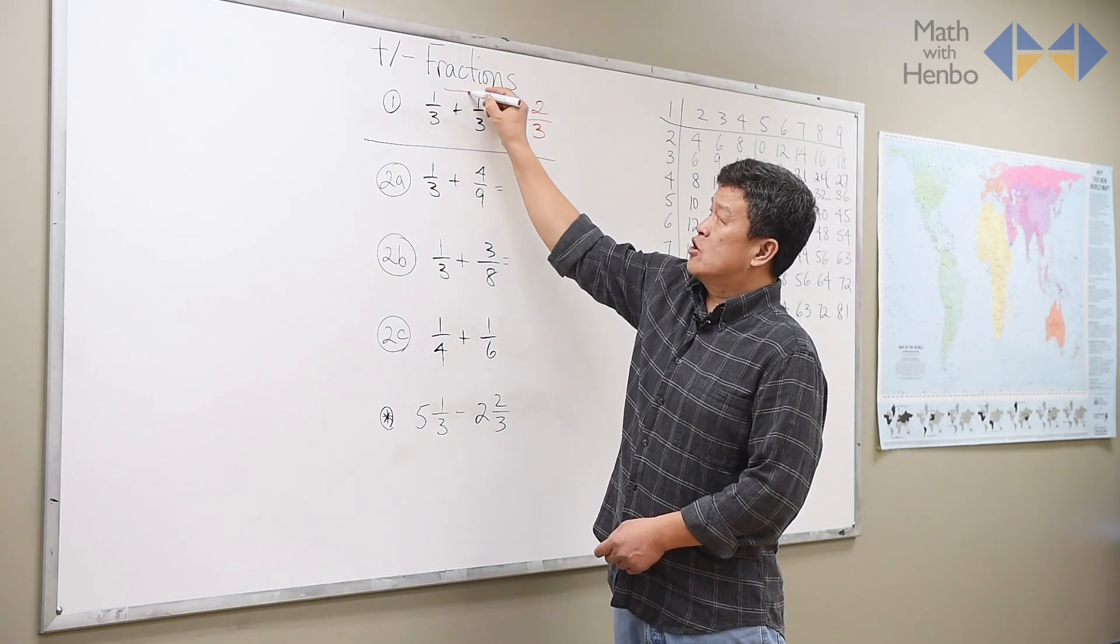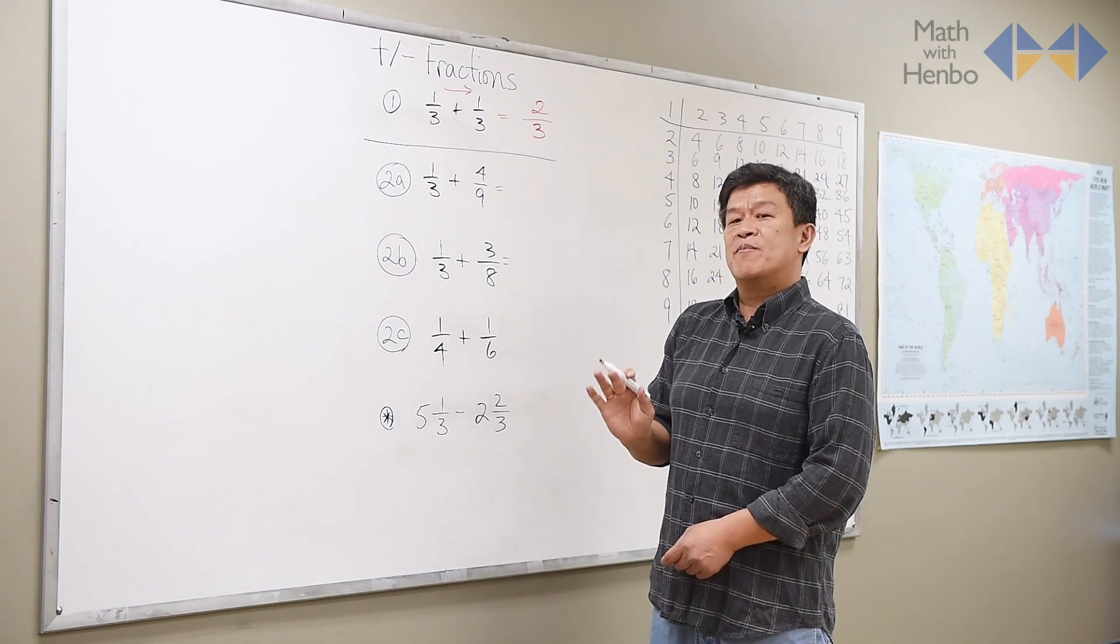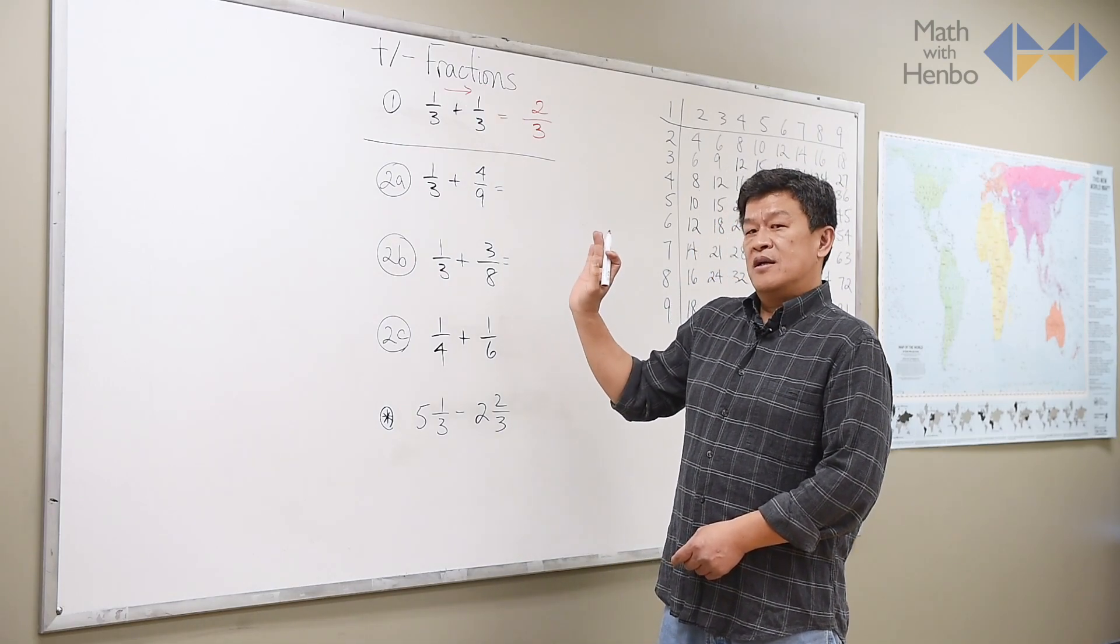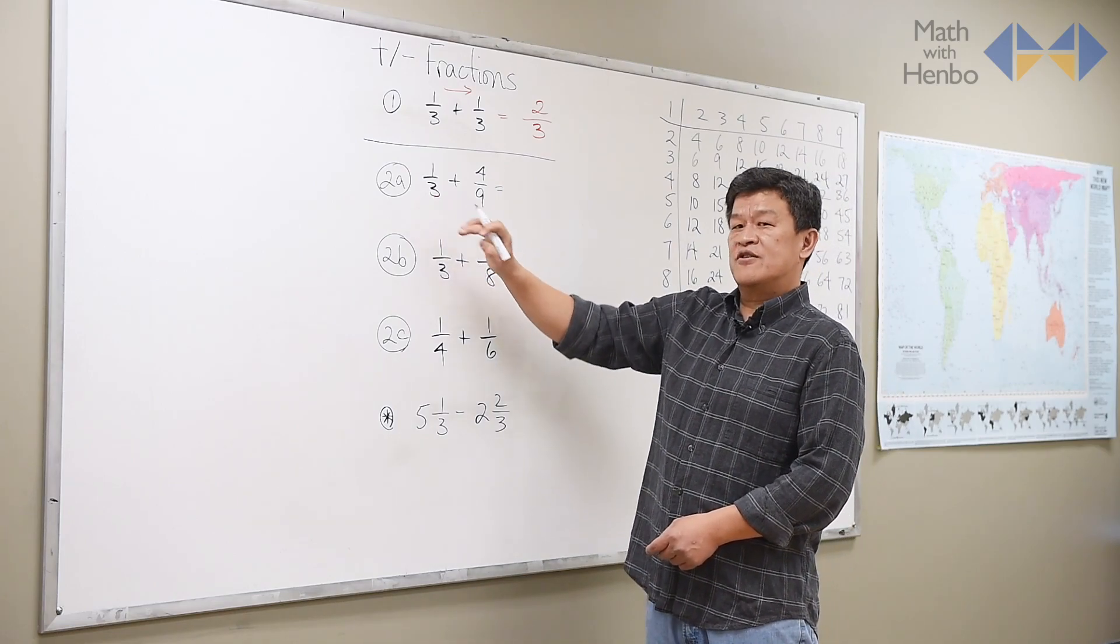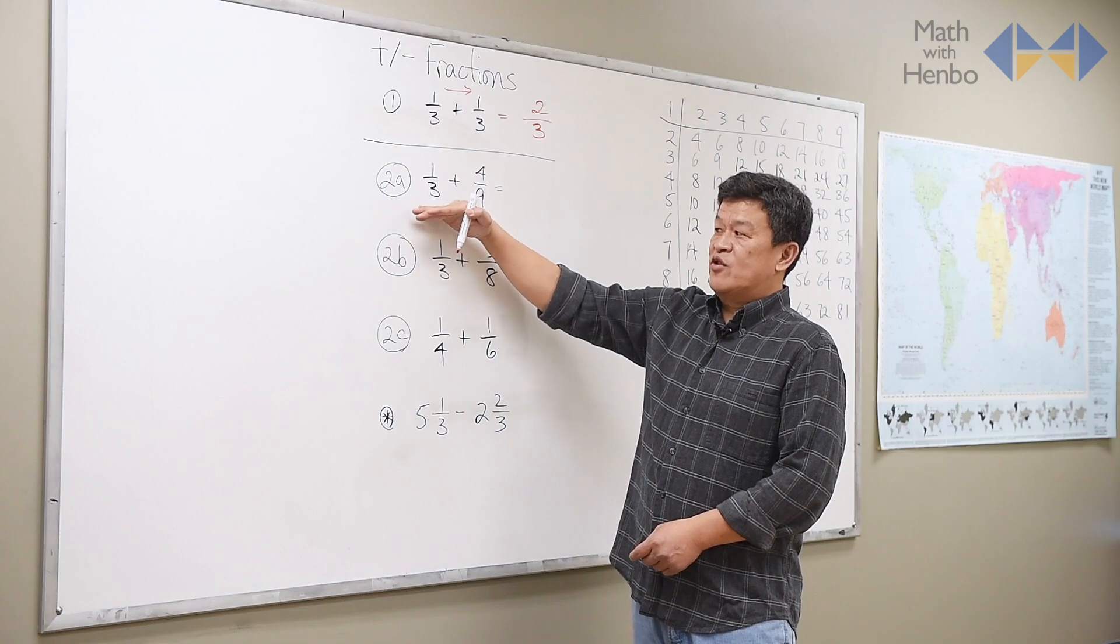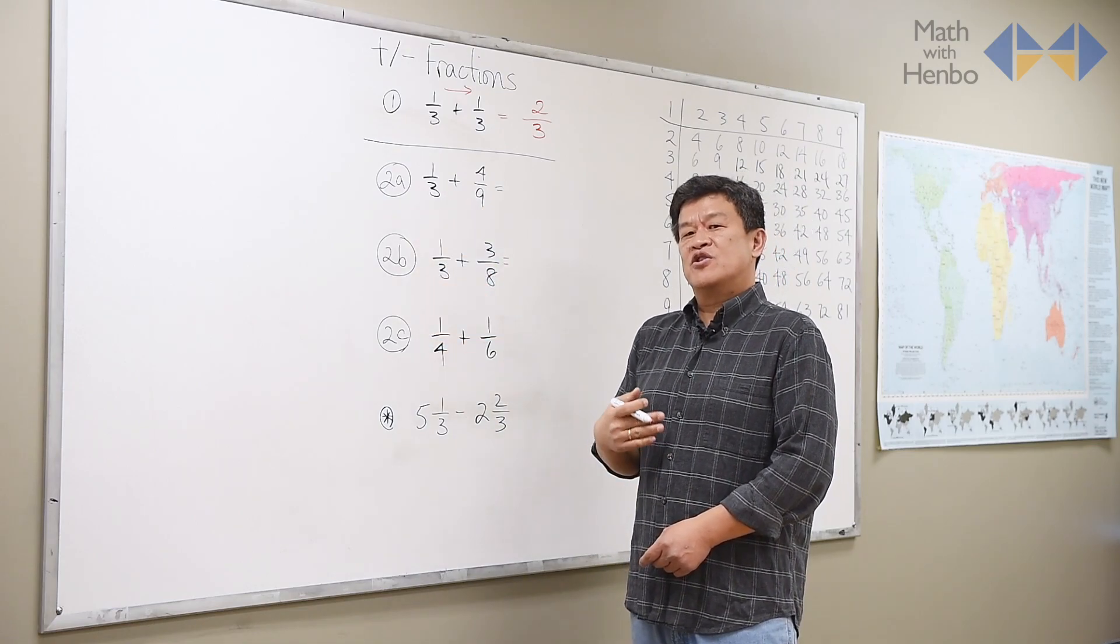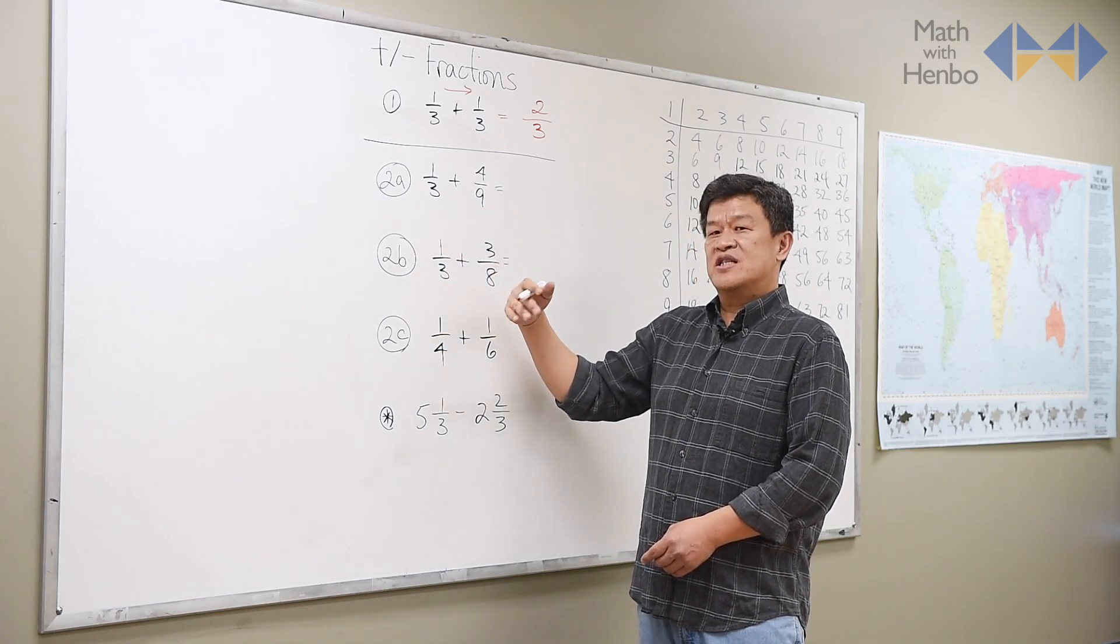For adding, add or subtract only the top numbers when the bottom numbers are the same. The situation changes when the bottom numbers are different, that's in the case of 2a. The reason why I have 2a, 2b, 2c is that I want you to think of doing fractions in this sequence.